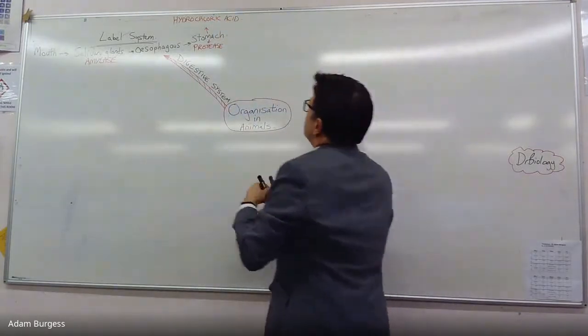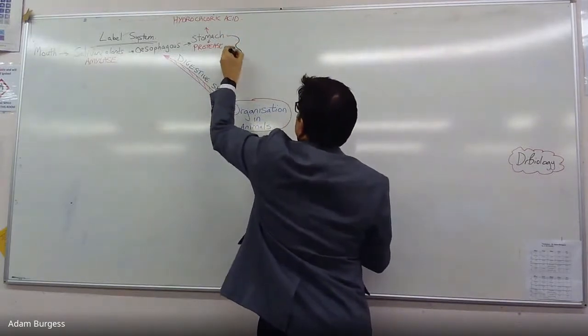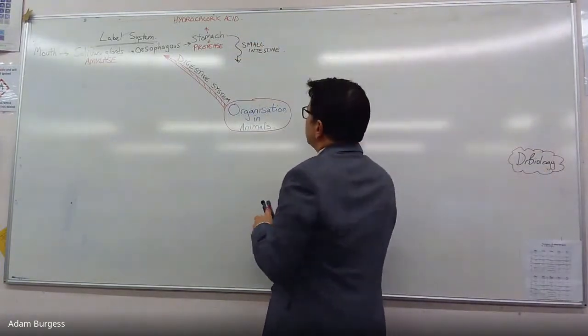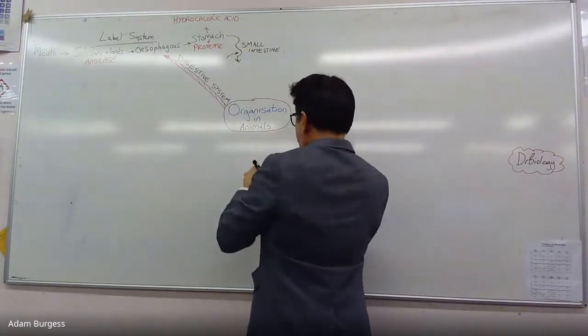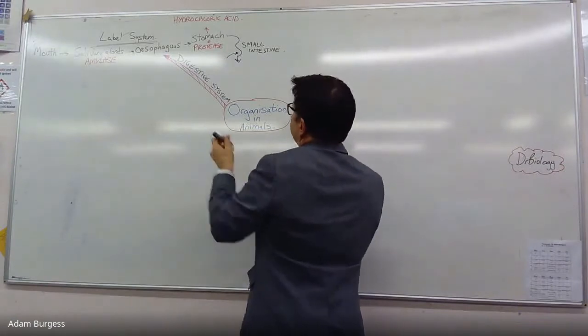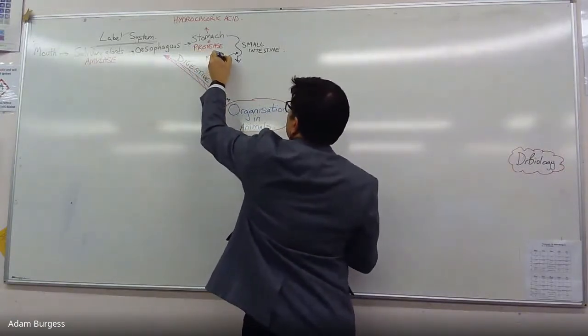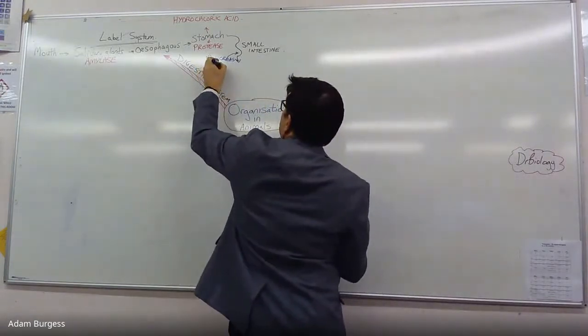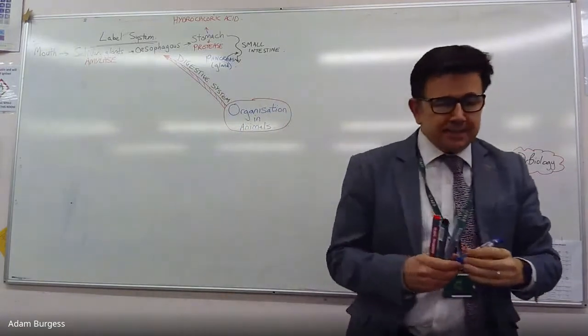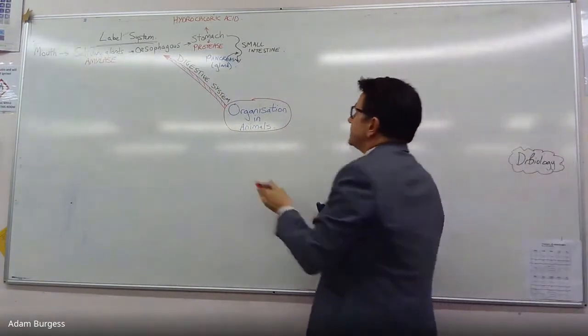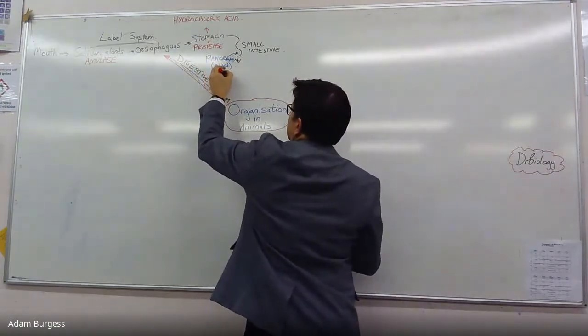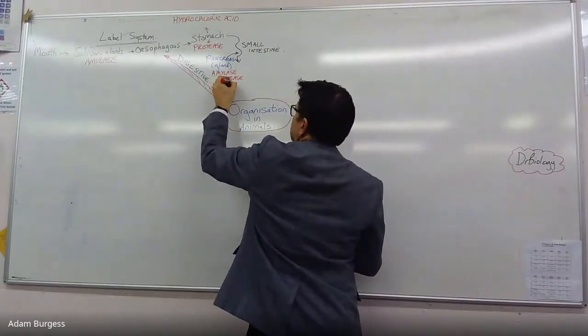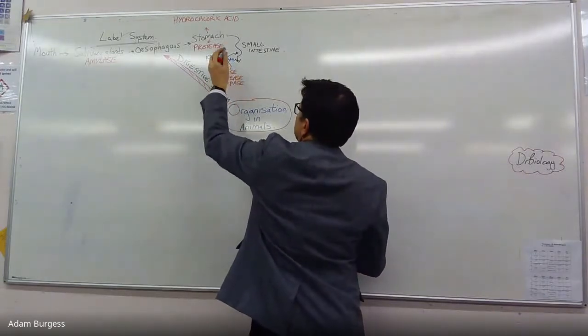Then it travels through the small intestine. Into the small intestine, we have two things going on. We've got the pancreas. Can anyone describe what the pancreas is? It's a gland. And it produces all three enzymes - amylase, lipase, and protease.